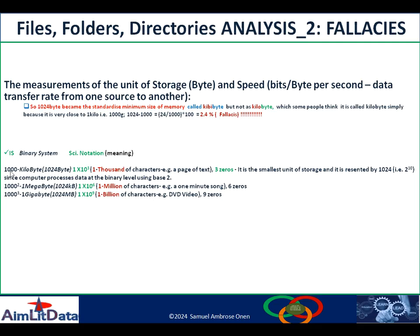When you multiply the base one thousand times one thousand squared, you get one thousand cubed, which is equivalent to one gigabyte according to the international system of numbering. However, critically speaking, the actual gigabyte is 1024 megabytes. In the SI system, it is equivalent to one billion characters. The scientific notation is 1 × 10⁹, where nine is the number of zeros. One billion characters could be equivalent to one minute of DVD video, for example.